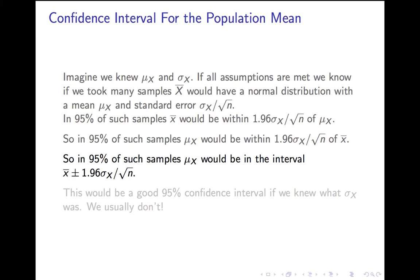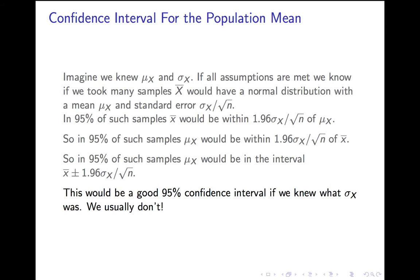That is a 95% confidence interval for the population mean, which is wonderful except for one problem: it depends on the population standard deviation sigma x, and we generally don't know that. It's rare that you would know the population standard deviation and not know the population mean — it happens every once in a while, but it's so rare we can largely ignore it.